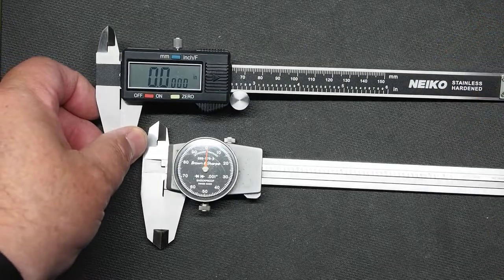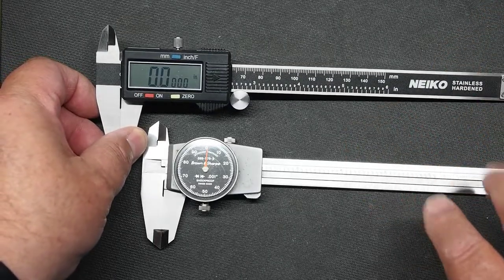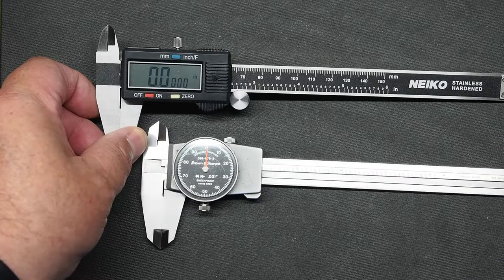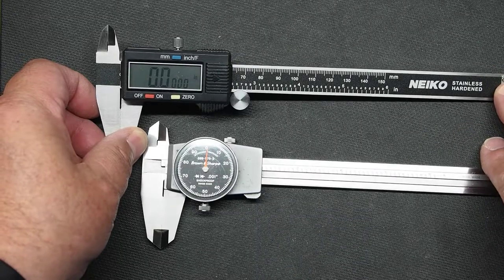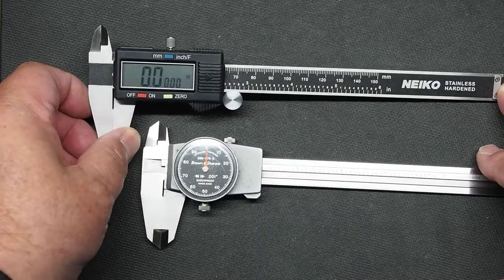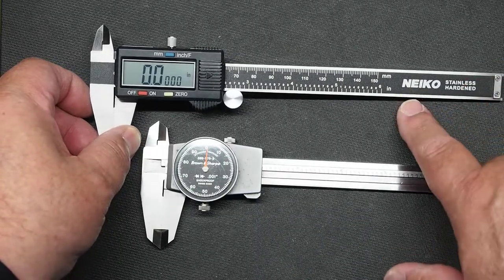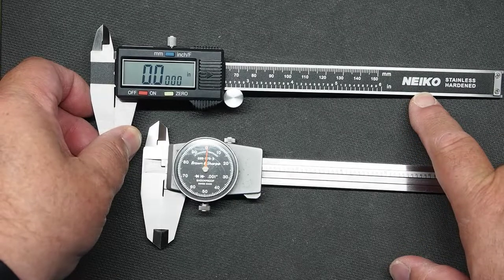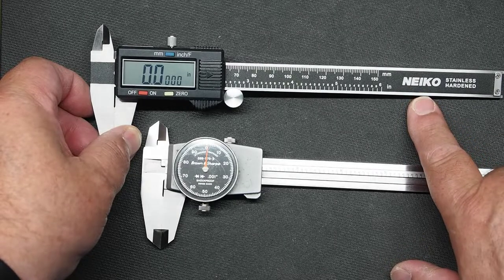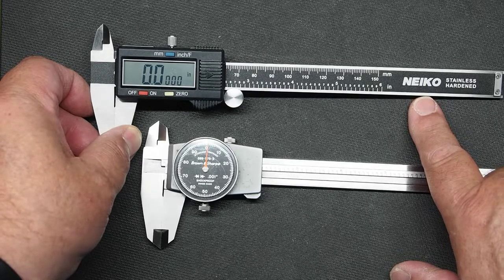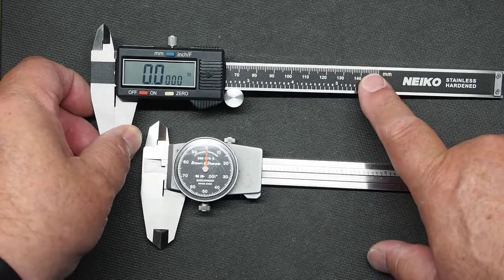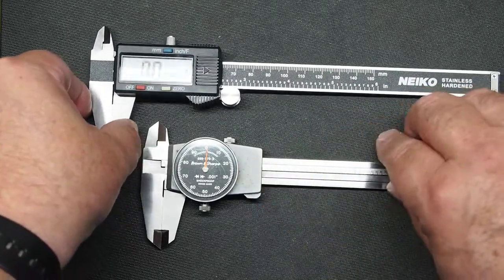Now these are available from a number of places. You can get these very inexpensively. Harbor Freight sells some very inexpensive units. These Neikos, I actually bought on Amazon. I think maybe they're just a step up from Harbor Freight's. They're not super precision high dollar instruments, but they seem to be very accurate. And compared to these Brown and Sharps.